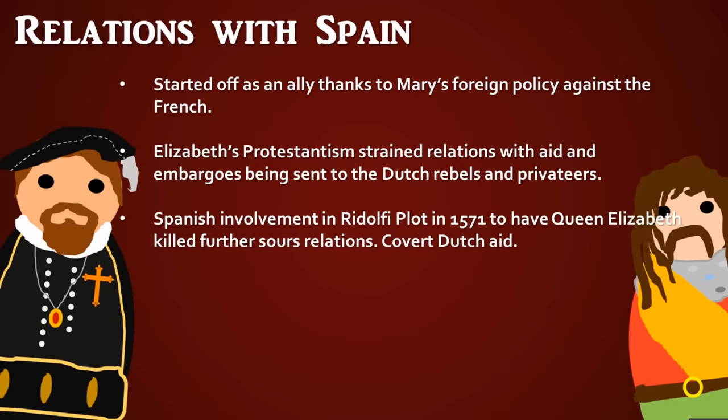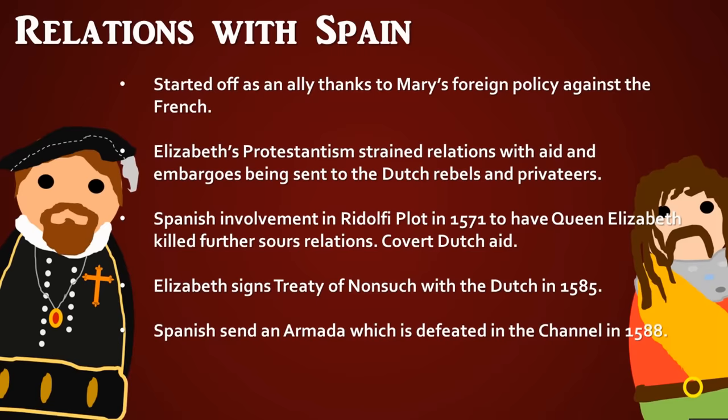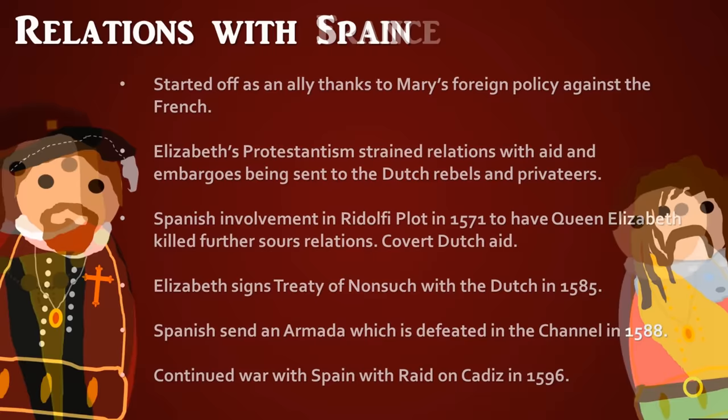When the Spanish became involved in the Ridolfi Plot of 1571, which aimed to have Elizabeth killed, this soured relations further. She supported the Dutch covertly and sent Sir Francis Drake to harass Spanish shipping. In 1585 she signed the Treaty of Nonsuch with the Dutch, sending the Earl of Leicester with an army of around 15,000 to fight the Spanish — open war. In 1588 the Spanish famously sent the Armada to invade England, which was successfully defeated in the English Channel. The war continued for the rest of her reign, a notorious example being the Anglo-Dutch raid on Cadiz in 1596 led by the Earl of Essex.